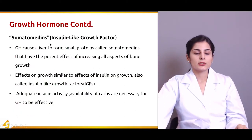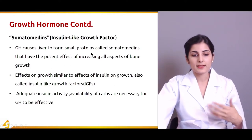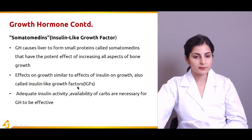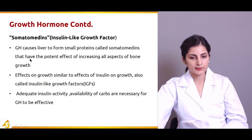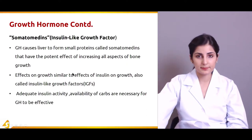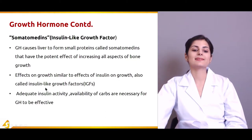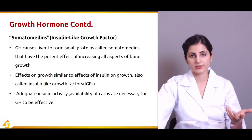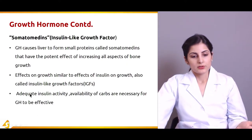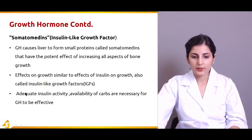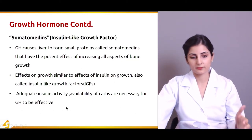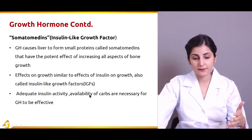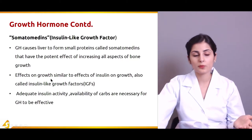Somatomedines are proteins produced by the liver, stimulated by growth hormone. They have a potent effect of increasing all aspects of bone growth. Because they activate insulin receptors and have an insulin-like effect, they are also known as insulin-like growth factor (IGF). They increase protein synthesis and have a positive effect on osteocytes and bone development. Adequate insulin activity and availability of carbohydrates are necessary for growth hormone to be effective — if a person is deficient in carbs or insulin, growth hormone effects will not be as efficient.